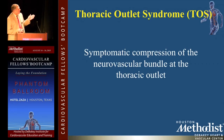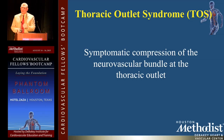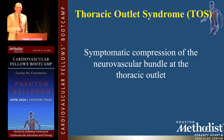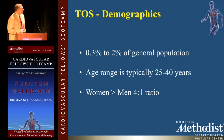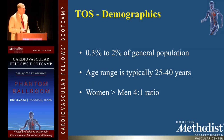Carl did a very nice explanation. Thoracic outlet syndrome is a symptomatic compression of the neurovascular bundle at the thoracic outlet. That's the diagnosis, but you've got to use that diagnosis to try and find out when a patient walks into your office and gives you this nonspecific complaint of arm pain. It's only going to happen in a very small degree of your patient population. The age range is 25 to 40, and women are more common than men.